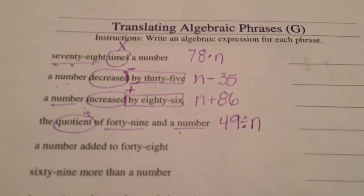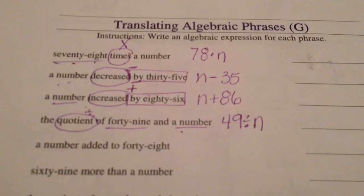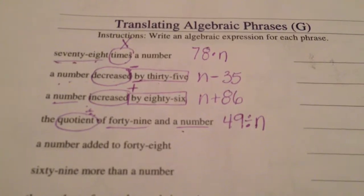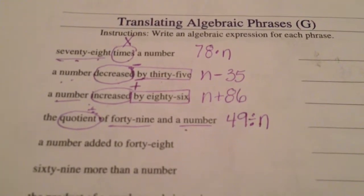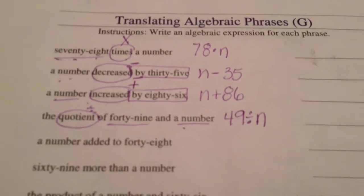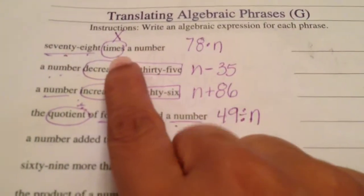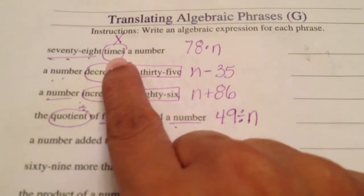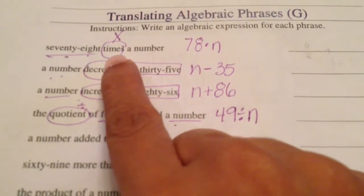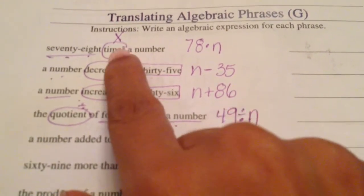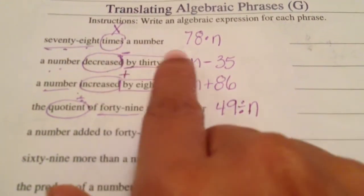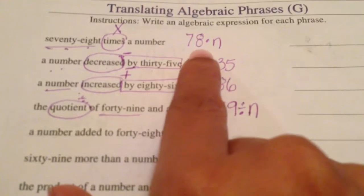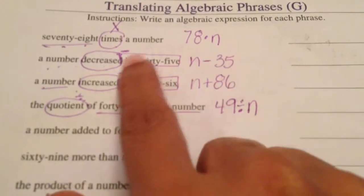We've done a lot of work in class translating algebraic expressions. We're going to look for keywords first that tell us an operation. For example, 'times' tells me I'm multiplying — 78 times the number.